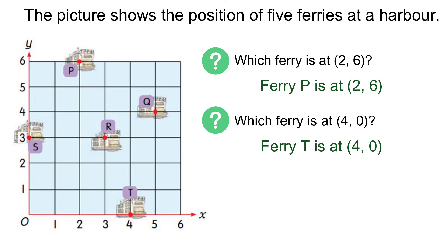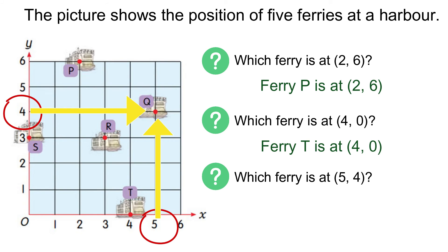What ferry is at 5, 4? X-axis is equal to 5 and y-axis equals to 4. From the x-axis 5, move up until y is 4. So, ferry Q is at 5, 4.